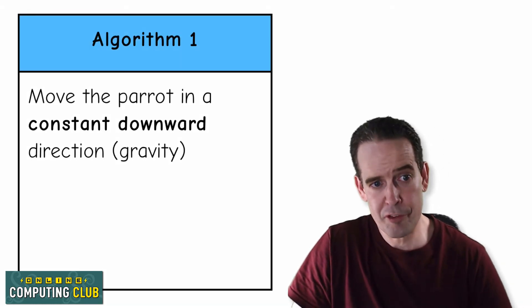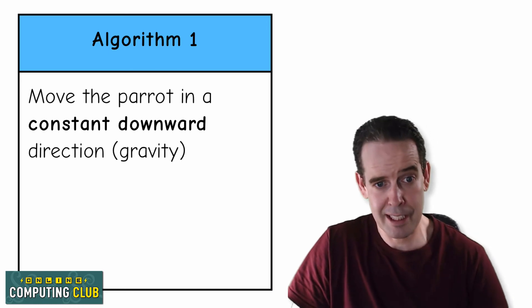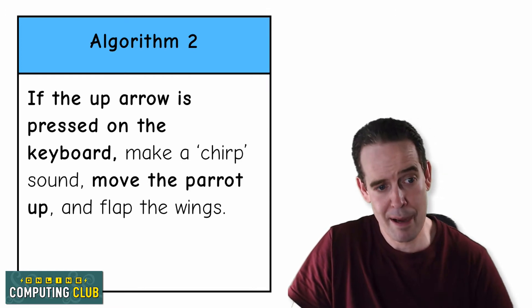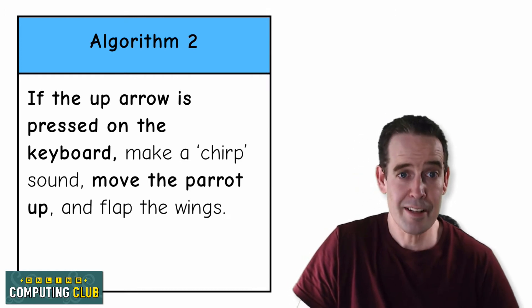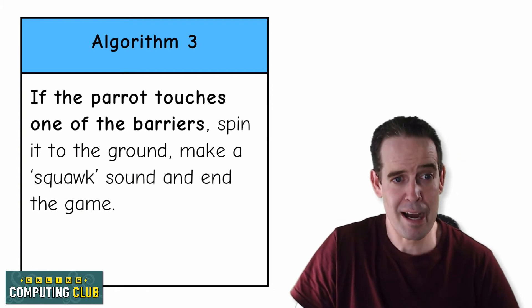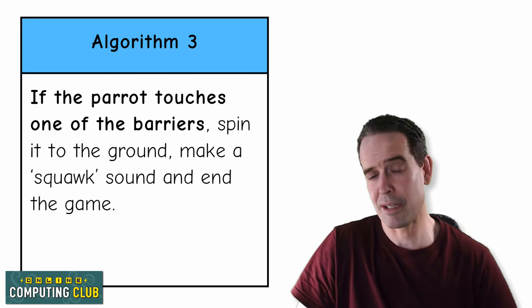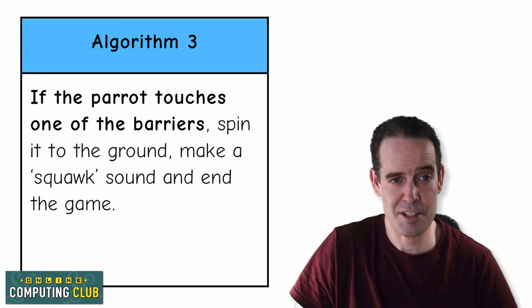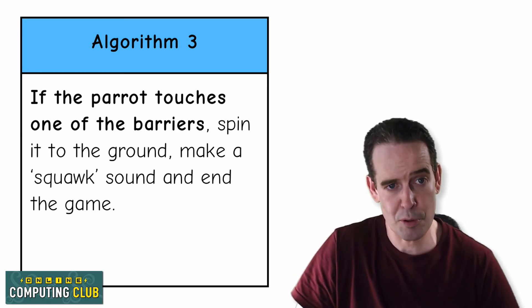Now we're going to turn those observations into algorithms in Scratch. We're going to make three algorithms — the first two in today's session and the third one for the parrot will be next week. The first is getting that constant downward movement happening, which is the modeling of gravity inside our game. The second is that when the up arrow is pressed we move the parrot upwards and flap the wings. The third, which we can't create until we've made the barriers, is that when the parrot touches a barrier we get the spin to the ground, the squawk sound, and the end of the game. In the next video we'll dive straight into Scratch and start building those movement algorithms for the parrot.